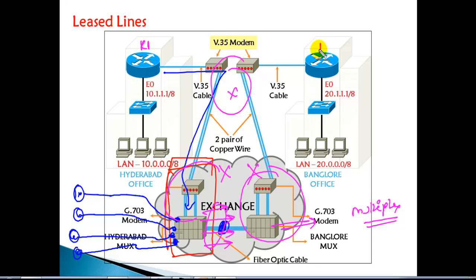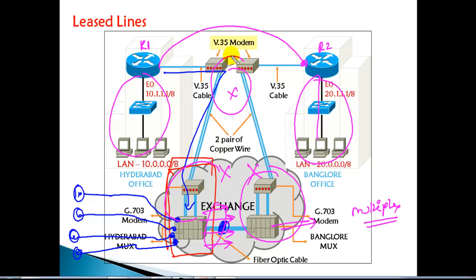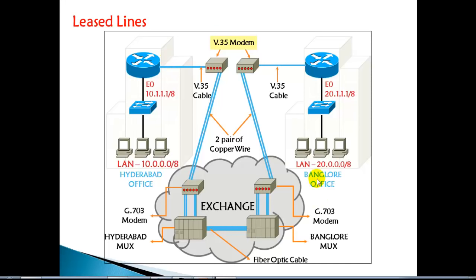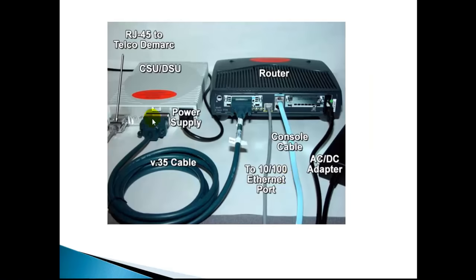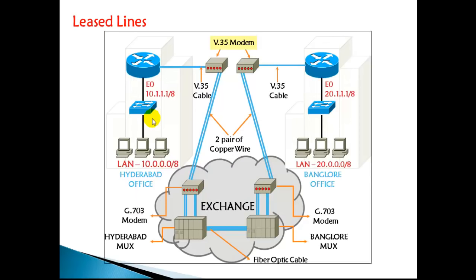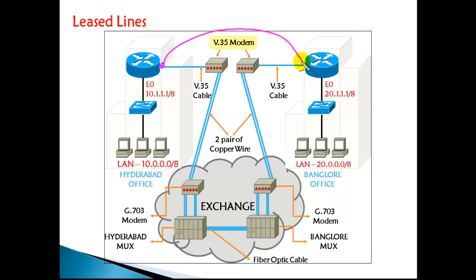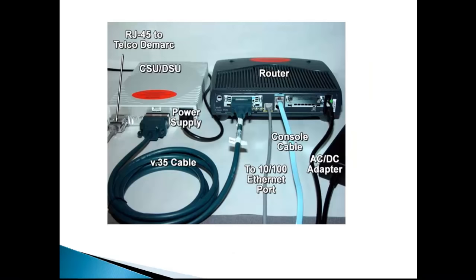Our job is on Router 1, Router 2, and within the LAN. The MUX and exchange infrastructure is provided by the service provider — we are just trying to understand how the wire connection is built by the service provider when taking a dedicated leased line. As long as we have a connection on our side, we don't really need to worry about the internals. This is how the typical WAN setup is built.